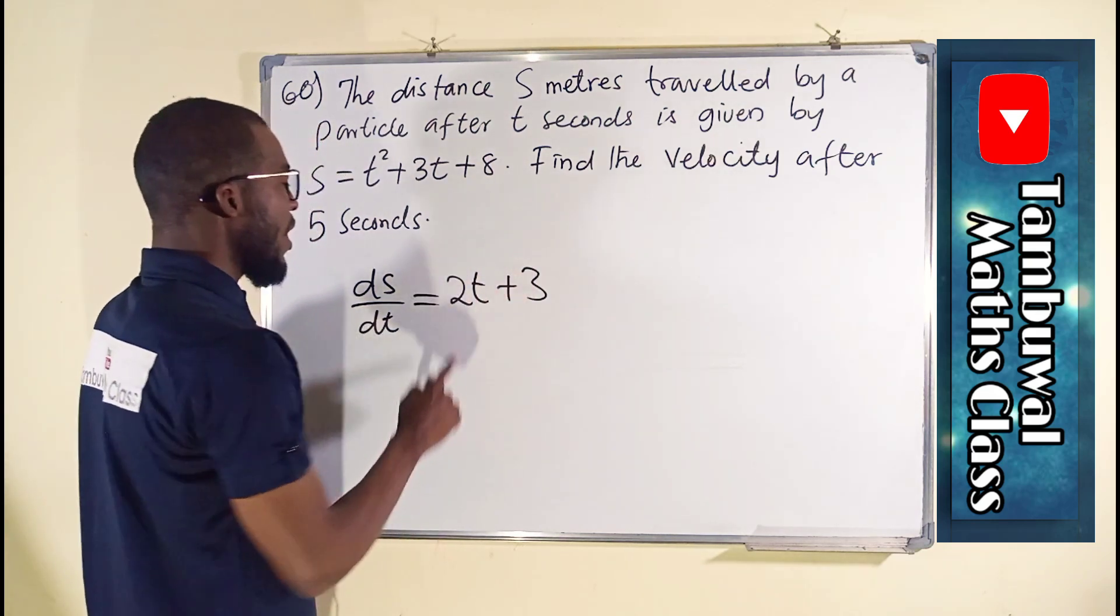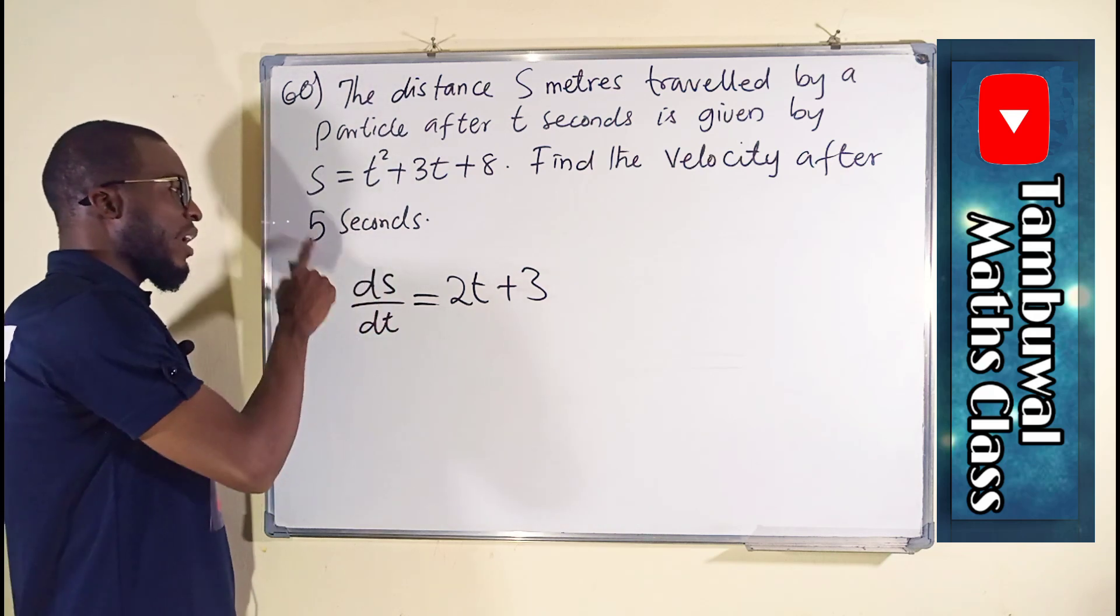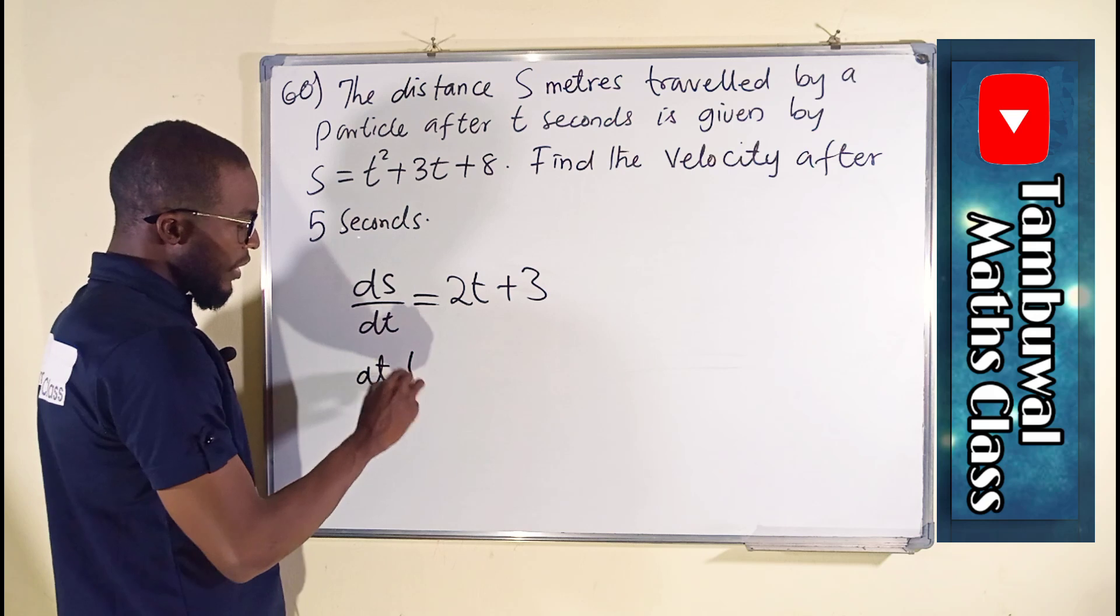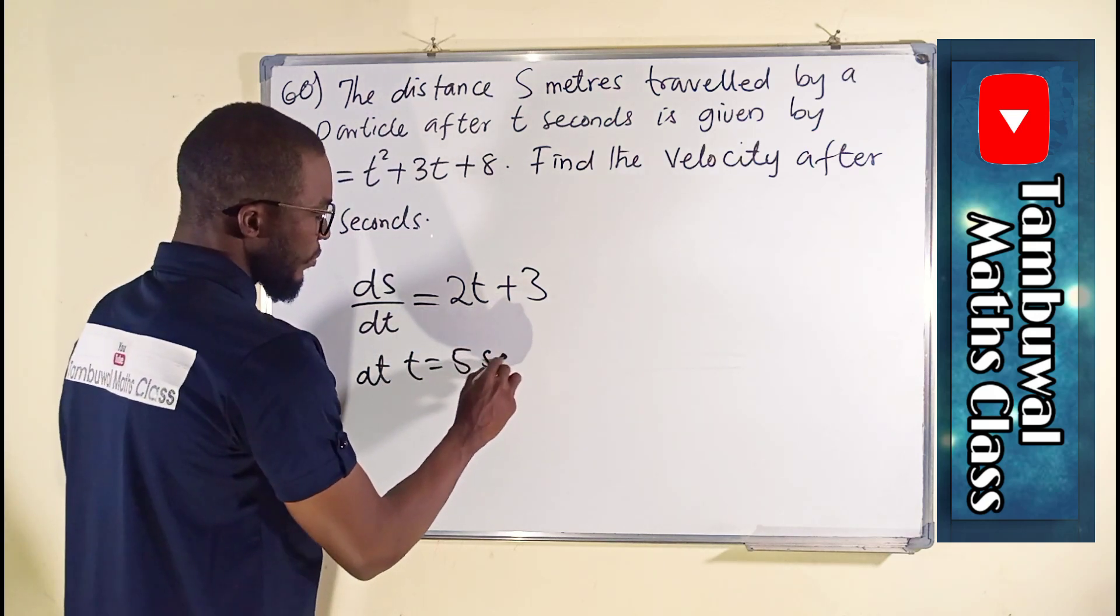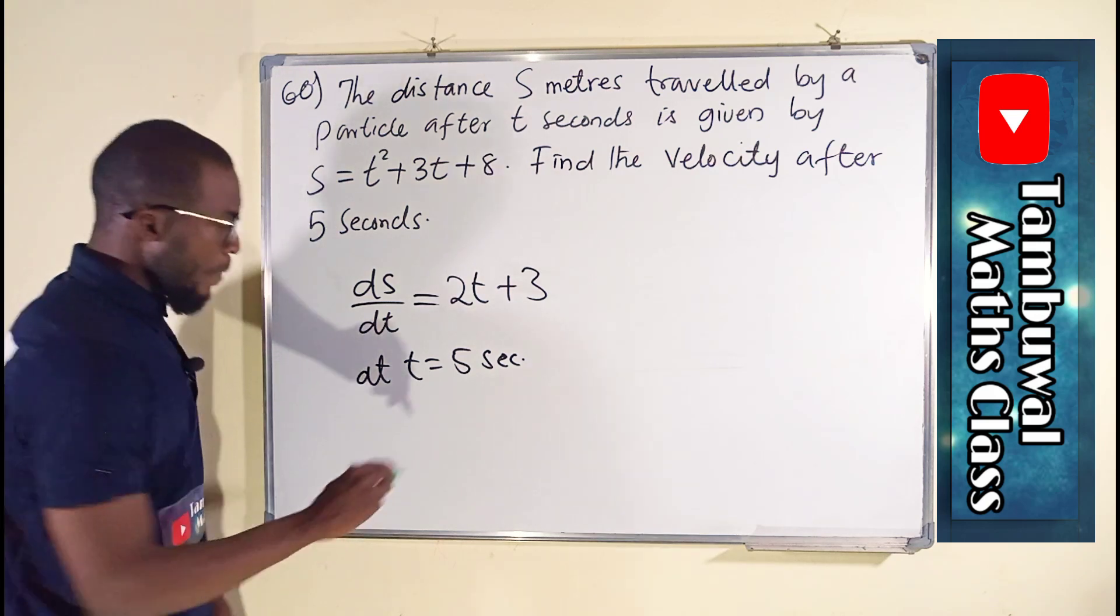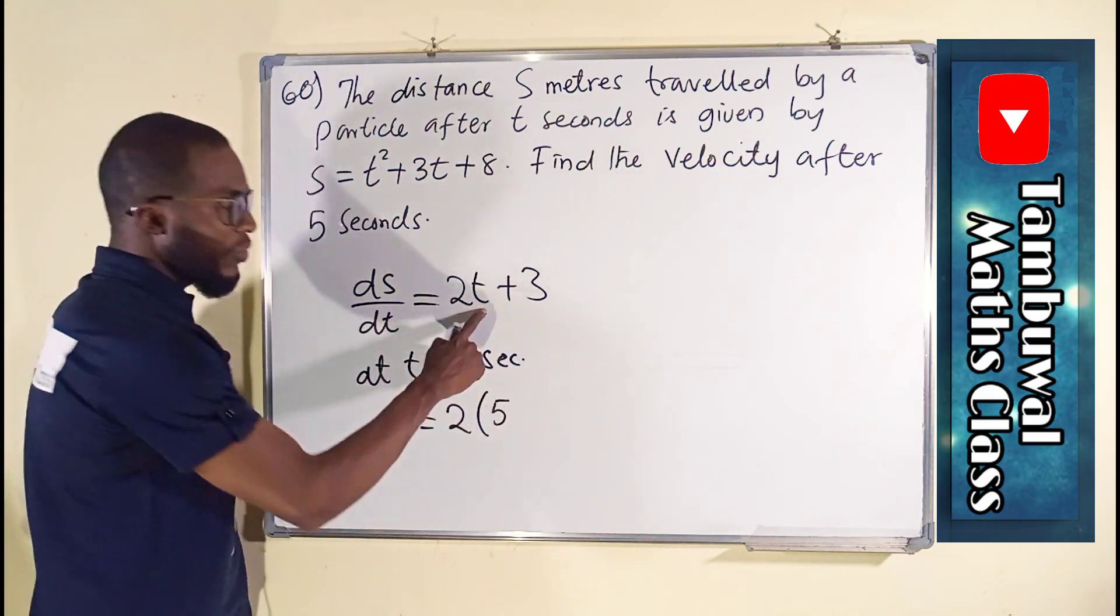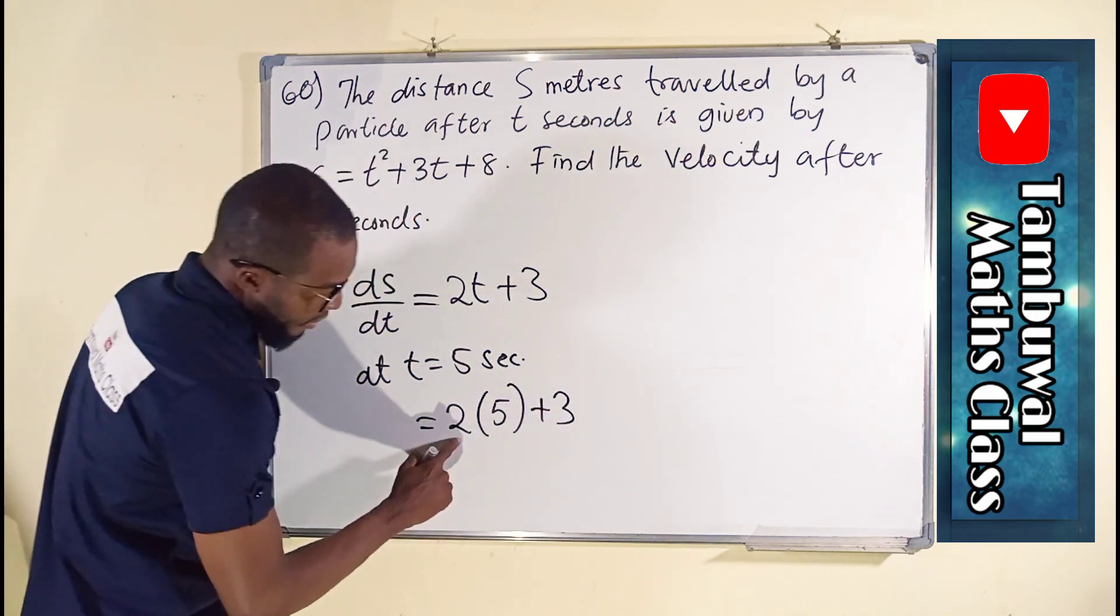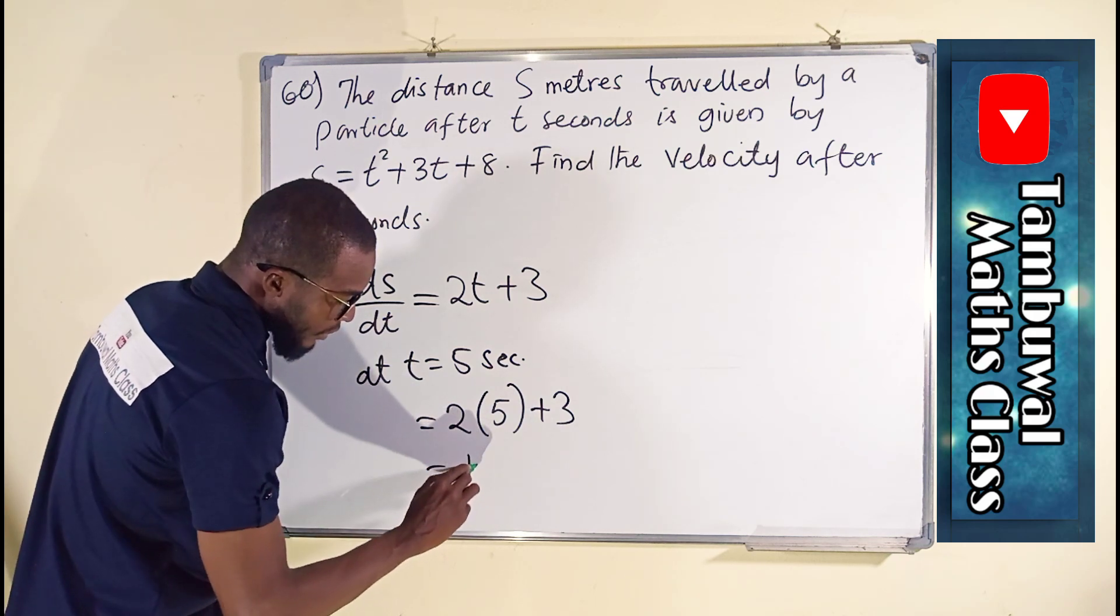So this is what we have as the first derivative, but we are asked to find this change after 5 seconds. So we say at t equals 5 seconds, this is equal to 2 multiplied by 5 because we say t is equal to 5 plus 3. This time this is 10 plus 3 is 13.